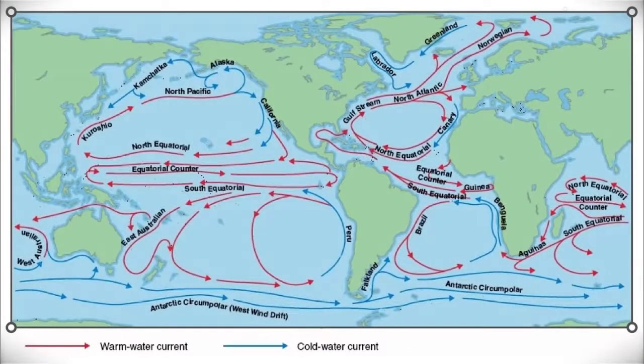Here you see an illustration of the ocean currents of the world. Some of these currents move very rapidly, like the Gulf Stream, 5-6 mph at times, or very slowly, 1-2 mph. And the deepest ocean currents can move at about 1-2 mph per year.